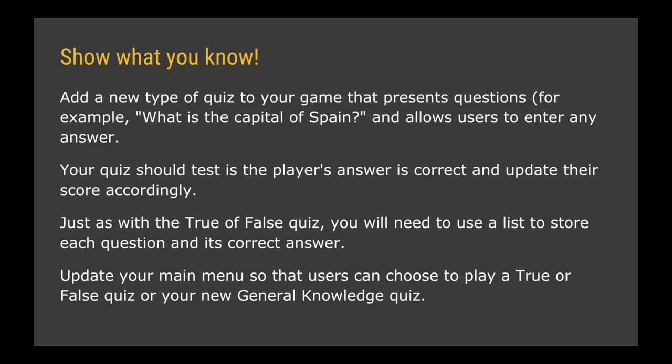For the final show-what-you-know task, try to add a general knowledge quiz to your game — one that presents questions like 'What is the capital of Spain?' and allows the user to type in any answer. Your quiz should test if the player's answers are correct and update their score accordingly. Just as with the true or false quiz, you'll need to use a list to store each question along with its correct answer. When it's working in its own subroutines, update your main menu so users can choose to play either quiz.